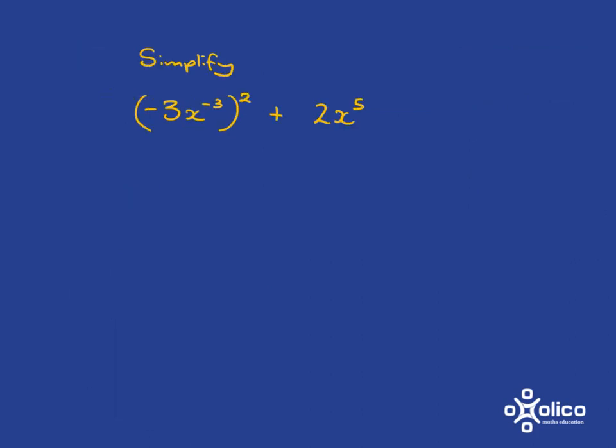One quick further example, if we're asked to simplify this thing over here, again it's just systematically going through it. So first we're going to be dealing with the squared, so each thing in the bracket needs to be squared. So negative 3 squared gives me 9, and x to the negative 3 squared will give me x to the negative 6. And then we've got plus 2x to the 5.